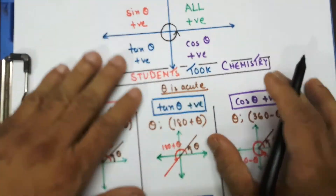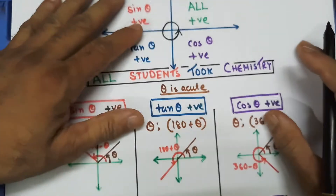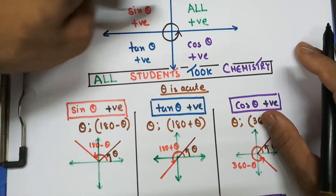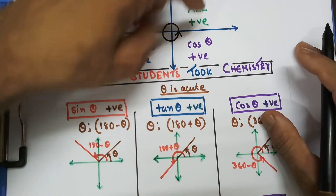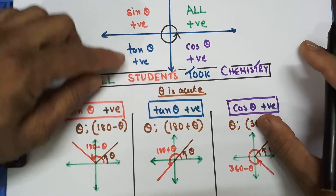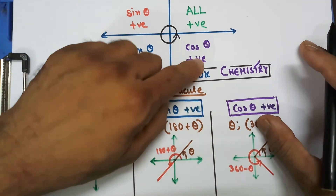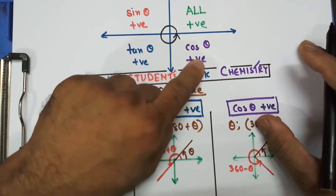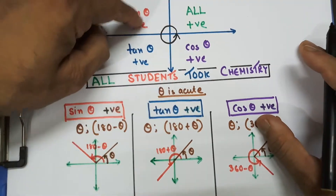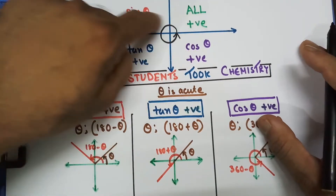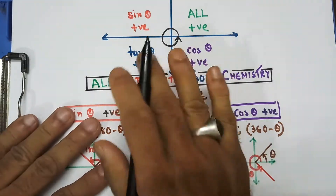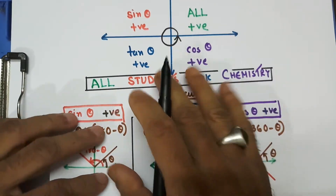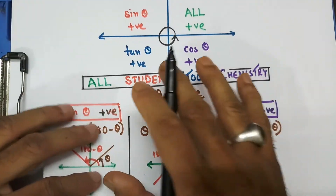This is one of the notes you have seen before — all sine tan cos. That means all positive in the first quadrant, sine positive in the second quadrant, tan positive in the third quadrant, cos positive in the fourth quadrant, if you go anticlockwise. We are going to use this. I'm going to show you that so many times in this video.